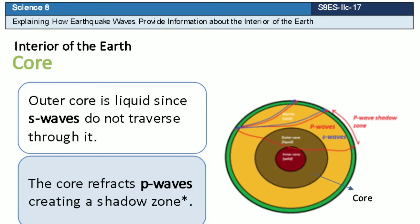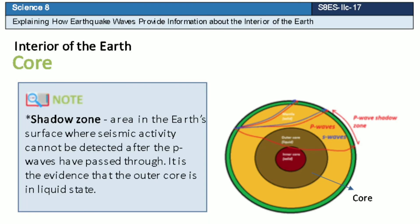The core is divided into two: the inner core and outer core. Only P waves can traverse the core since the outer core is liquid. Seismic activity cannot be detected after P waves have passed through. The core refracts P waves, which then creates a shadow zone — the area on the Earth's surface where seismic activity cannot be detected. It is evidence that the outer core is in a liquid state.